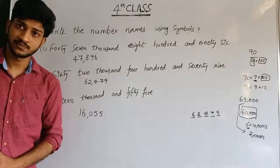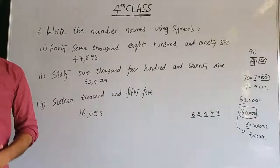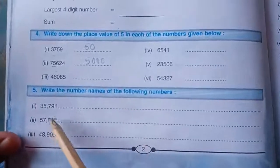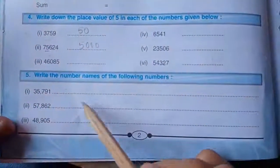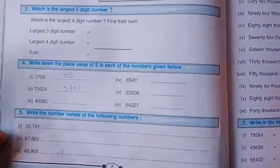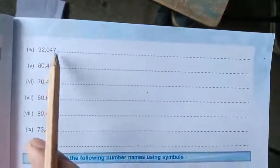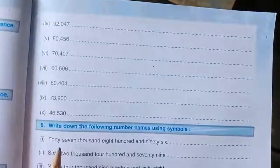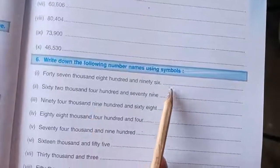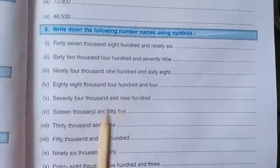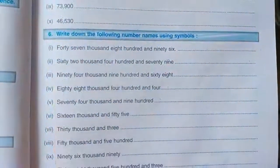Okay, I will give a few more problems to you now. Children, let's see the question: write the number names of the following numbers. Number names are also known as word forms. We have many numbers on this page. Next question: write down the following number names using symbols — that means convert them into numeral form.